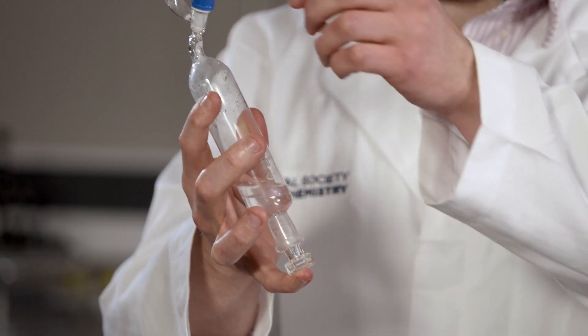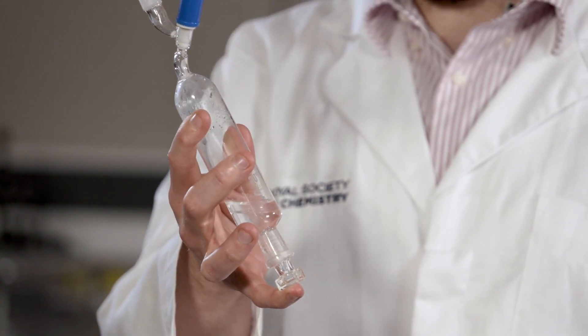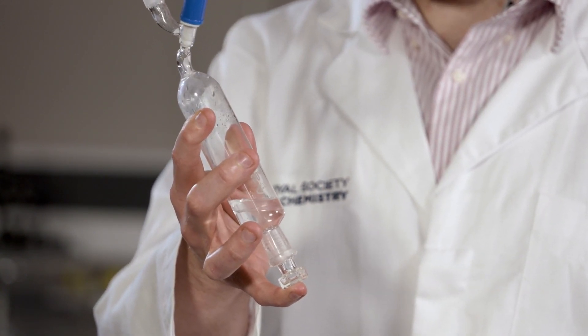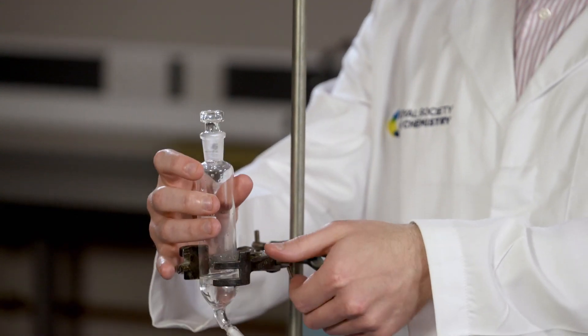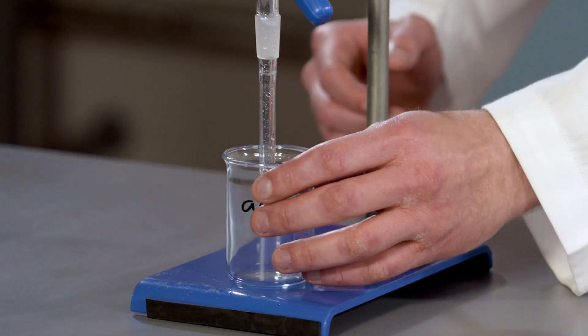We know this removal of acid is completed because the effervescence has stopped. Keeping my finger on the stopper, I'm now going to close the tap of our separating funnel and invert it again. Just like I did previously, I'm going to remove the aqueous layer.